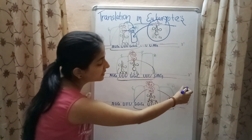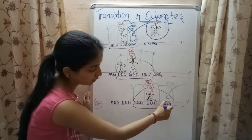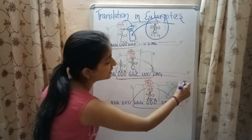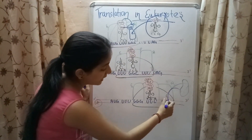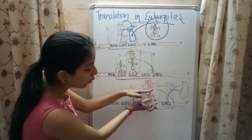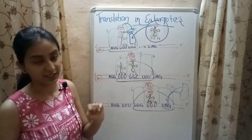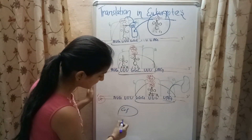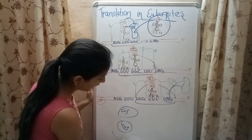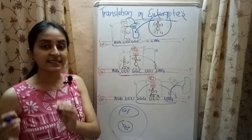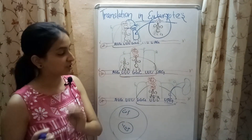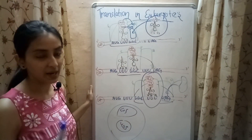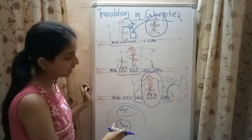Once the ribosome reaches the termination codon in the mRNA, no amino acid binds. Instead, a factor known as the releasing factor binds to the mRNA sequence, and the entire complex dissociates. The 60S and 40S subunits of the ribosome are now free and ready to initiate another cycle of translation. This is how a polypeptide chain is formed from mRNA with the help of ribosomes.